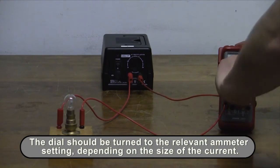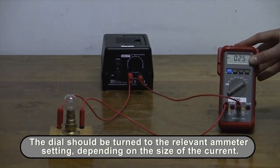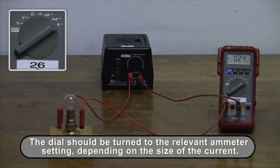In order to read the current, the main dial must be switched to an ammeter mode. There are three modes corresponding to the ranges: amps, milliamps and microamps.